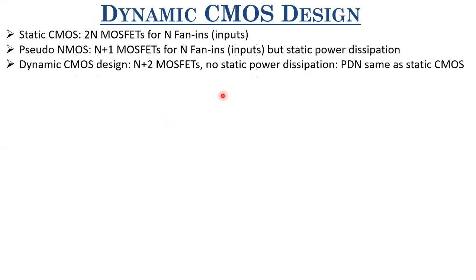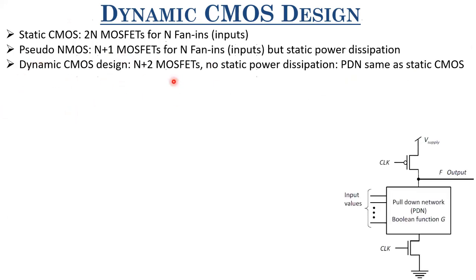The pull-down network is the same as static CMOS. If you look at the structure of dynamic CMOS design, you have a floating output node connected to the supply via a P-MOSFET fed by the clock, then the pull-down network, and then the evaluation transistor. The P-MOSFET is called the pre-charge transistor and the bottom N-MOSFET is called the evaluation transistor. This output is floating — specifically, it can be floating during the evaluation phase, but not during the pre-charge phase.